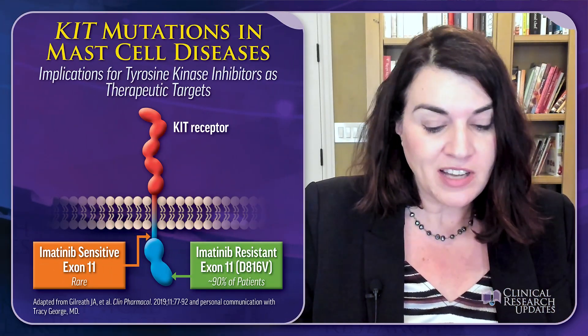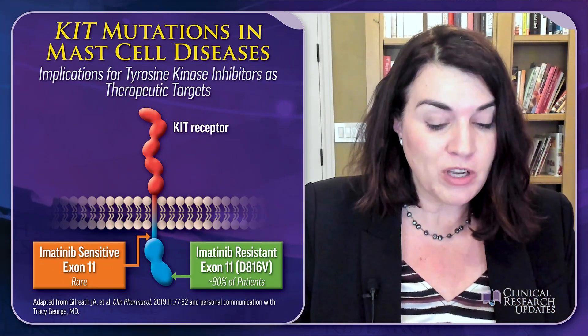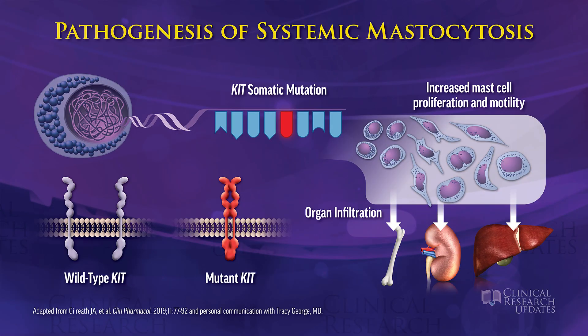In systemic mastocytosis, almost all patients have a mutation in the KIT gene that encodes the KIT protein — a transmembrane tyrosine kinase type 3 receptor which binds stem cell factor. As you can see at left, this is the wild-type KIT receptor, where binding of stem cell factor must occur before activation. But in mutant KIT, most commonly D816V — a substitution of aspartic acid with valine — the receptor dimerizes and becomes constitutively activated.